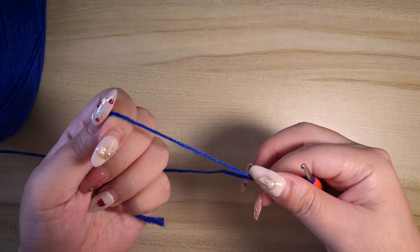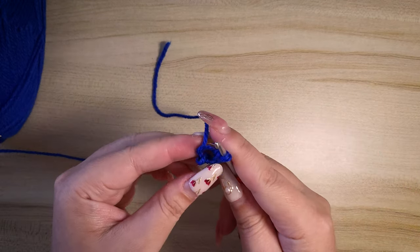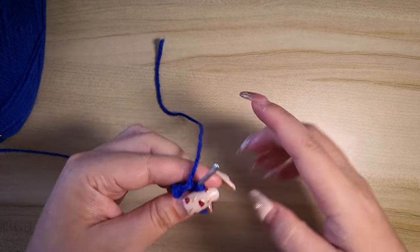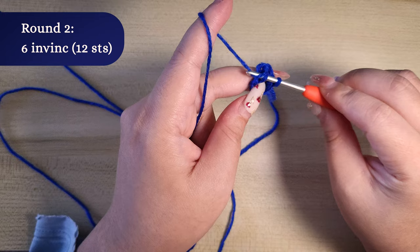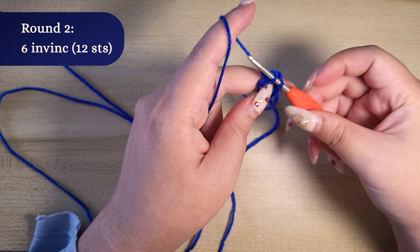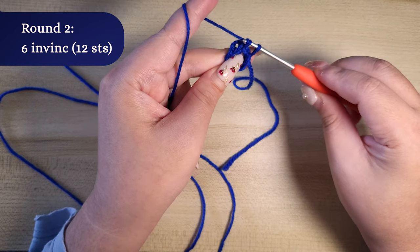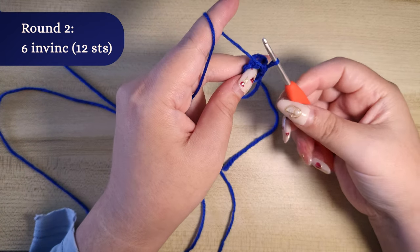I tighten the magic ring here by pulling the end tail so we can identify our first stitch. We are now going to start increasing to make the round shape. Do invisible increases six times. We will end up with 12 stitches at the end of the round.